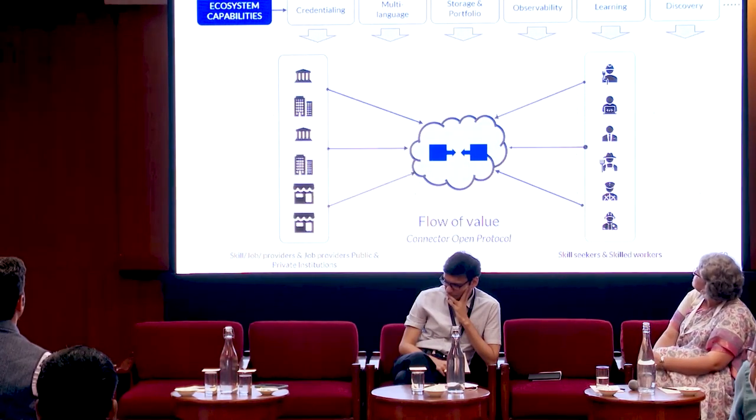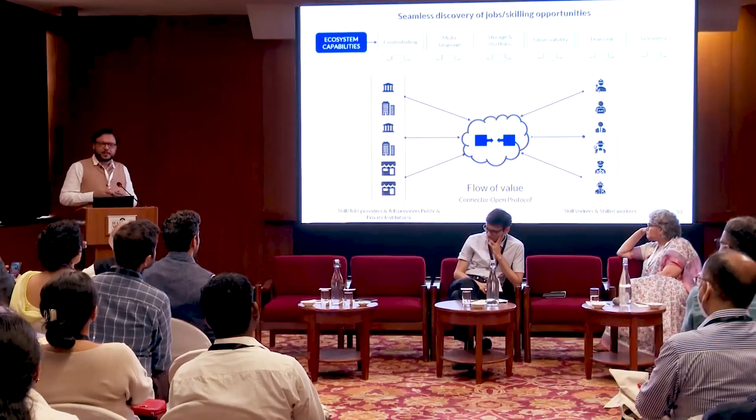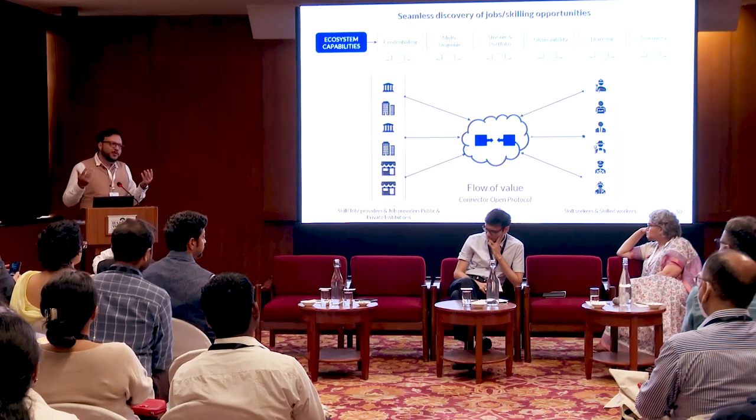Looking at the flow of value from both sides — job providers and skilling providers on one side, and seekers looking for a job, training, or skill on the other — the flow of value is somebody being able to find the relevant thing and somebody being able to offer the relevant thing. Today this gets captured in a few platforms. But how do you make sure that different platforms also get connected through open protocols?